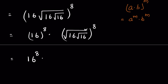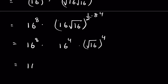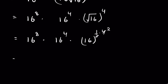Again, removing the square root, we write it as 16 times √16 raised to the power of 1/2 times 8. Since 2 times 4 is 8, this gives 16^8 times 16^4 times √16 raised to the power of 4. Since 2 times 2 is 4, this equals 16^8 times 16^4 times 16^2.